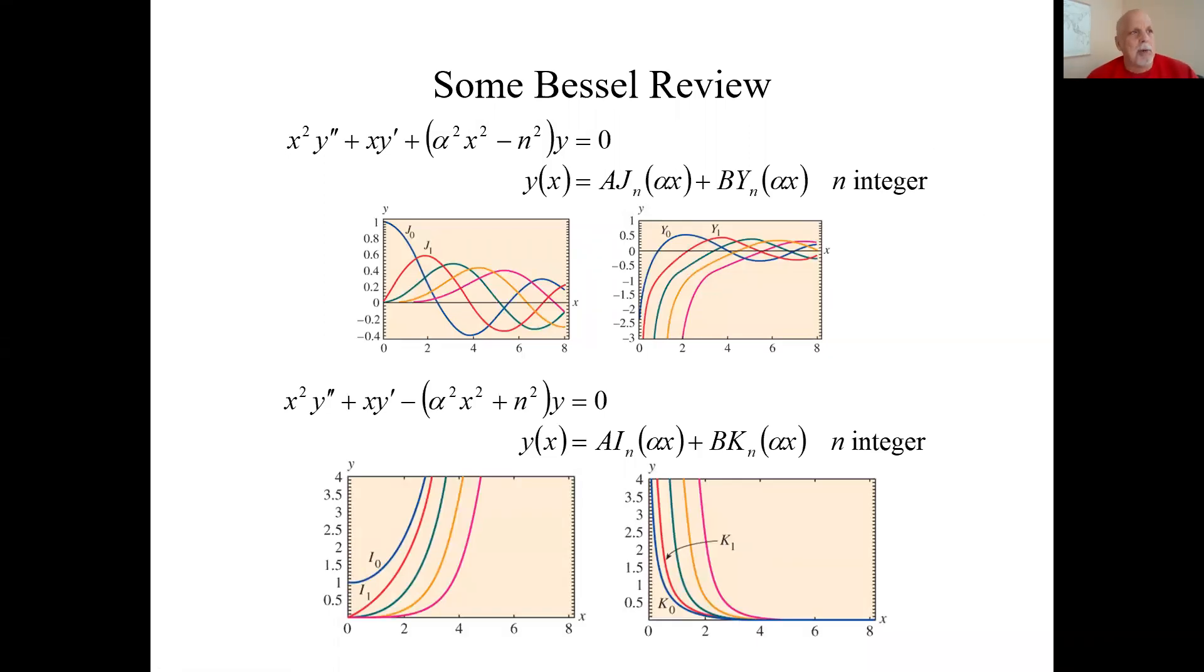We're going to do another example of a partial differential equation boundary value problem in cylindrical coordinates. And once again, we'll be seeing the Bessel equation and the modified Bessel equation. Here is the Bessel equation. Here's the modified Bessel equation. And we're only going to run into order zero. So these n's will be zero.